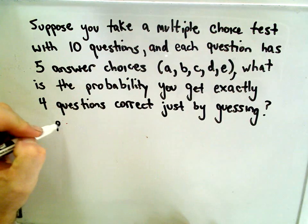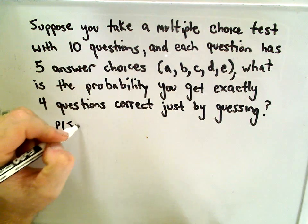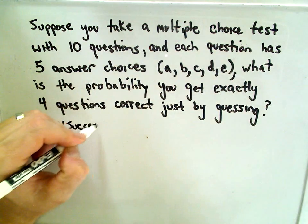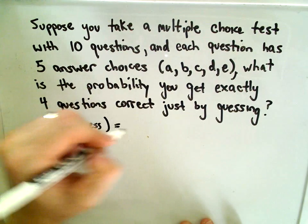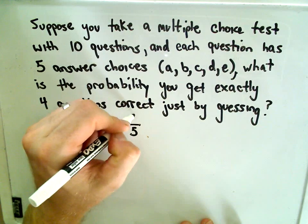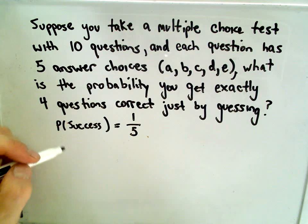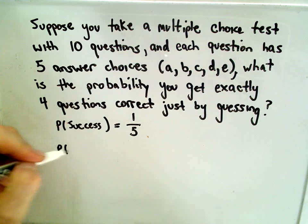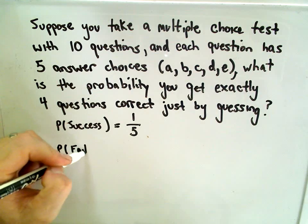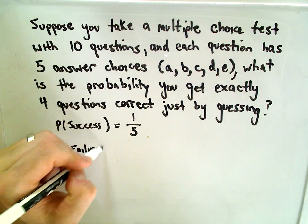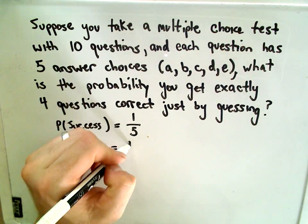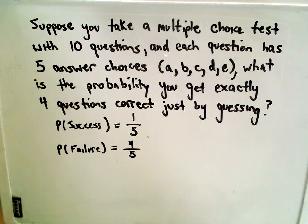Okay, so in this case, the probability of success, getting a question correct, well, if there's five answer choices total and I only have, I've got to pick one of those, the probability of success will simply be a fifth. Therefore, the probability of failure, getting the question incorrect, must be four fifths.